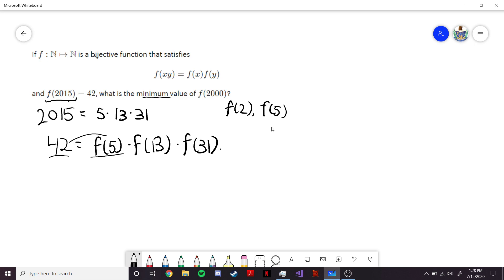In particular, if we take this equation here, and we plug in x and y are equal to 1, we would get that f(1) is equal to f(1) times f(1). Now, f(1) is some natural number, and the only natural number that is equal to its own square is 1. So therefore, f(1) is equal to 1.